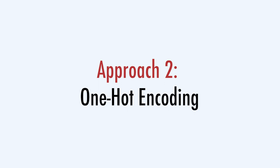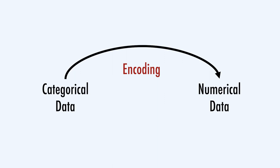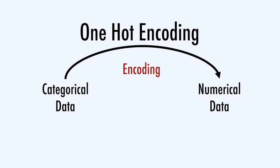A second approach to deal with categorical data is to encode the categorical data before we do the clustering. The idea is to transform our categorical features into numerical features even before we proceed to cluster the data. We can try to encode the categorical data using different methods, but a famous one is the scheme of one-hot encoding.